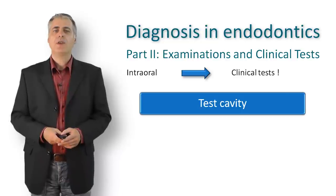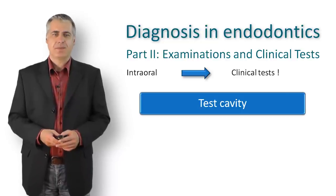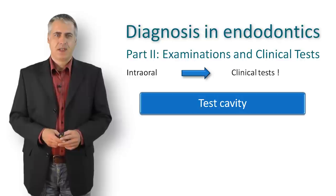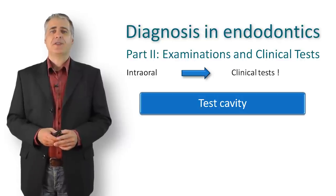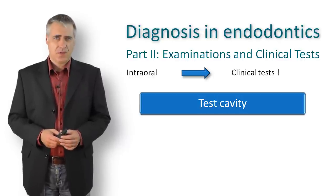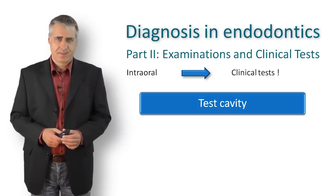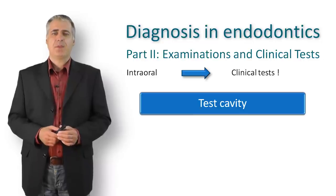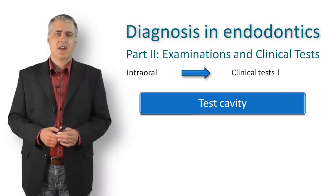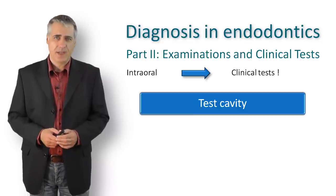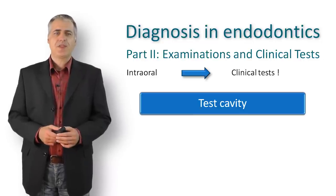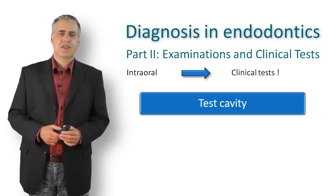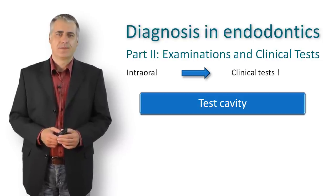In older patients, a pulp test might be unsuccessful, especially when no tooth responds to the cold test. Calcified pulp chambers and canals are most commonly the reason. With full ceramic restorations, an electric or cold test will often fail as well.